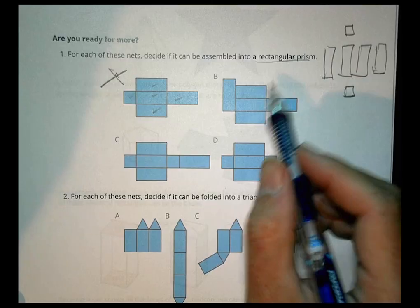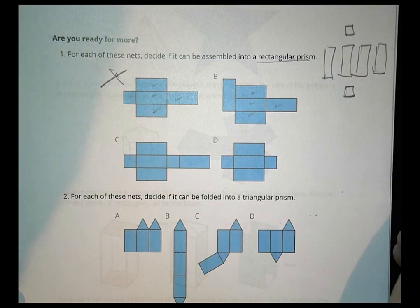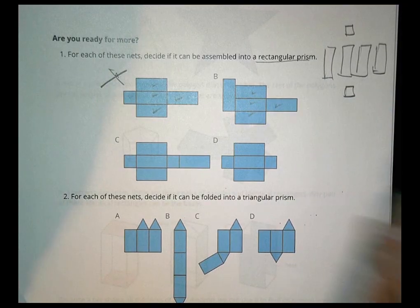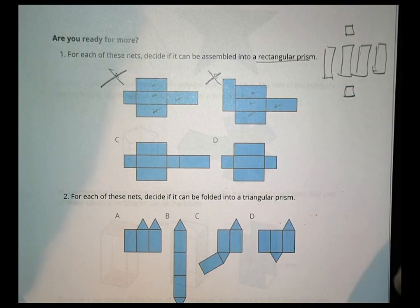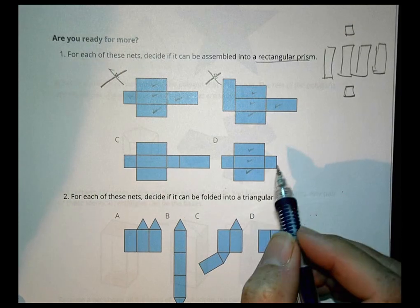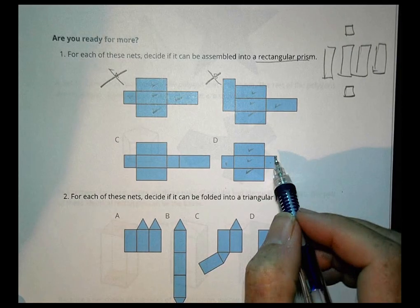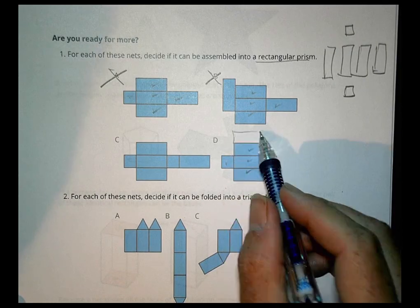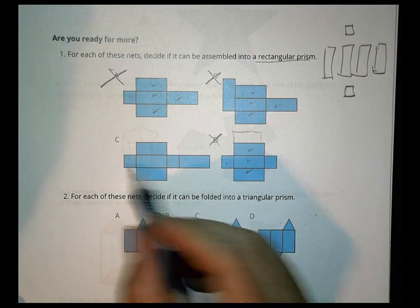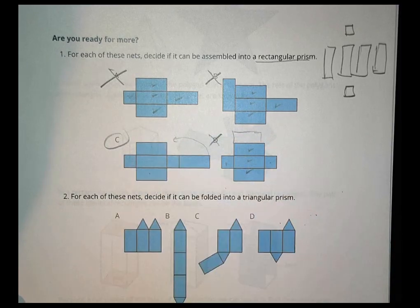Over here we have four pieces and a rectangular top — it's just not going to work out, we're short a piece. Here we have three rectangles but I'm short a rectangle — I need one more for that to work. Here, you'd fold up, fold up, fold up, and then put the lid on top, and we're going to be okay. So C would work great.